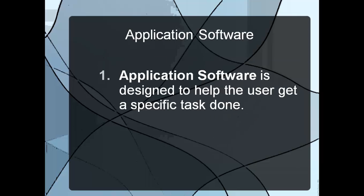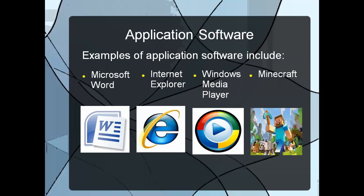The first category is application software, and it's a very broad category. Essentially it's any kind of software that's designed to help you get a very specific task done. There are several examples: it could be word processing like Microsoft Word, an internet browser, Windows Media Player, or Minecraft — any kind of game.